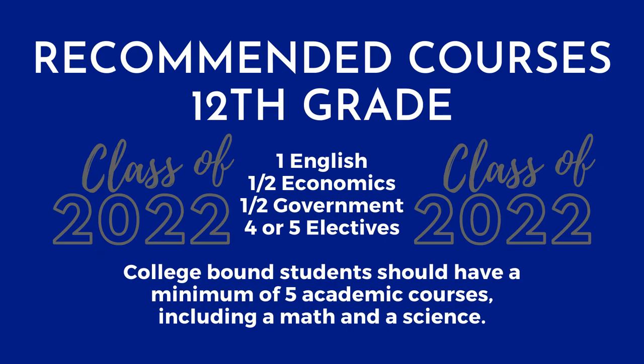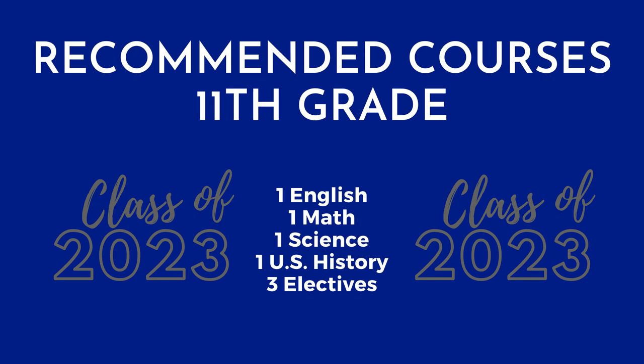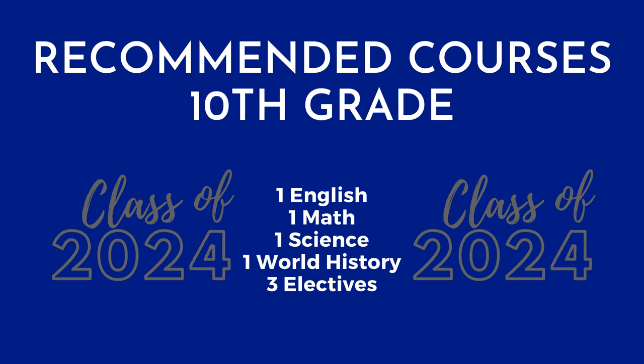So what are the recommended courses for a 12th grade student? 12th graders should be signing up for an English class, Economics, and American Government, then four or five electives. College-bound students want to make sure they have a minimum of five academic classes, including a math and a science, even if they've already met graduation requirements. Incoming 11th graders will be signing up for English, math, science, U.S. History, and three elective courses. Incoming 10th graders will have English, math, science, World History, and three electives.